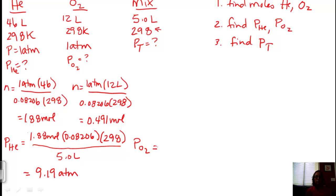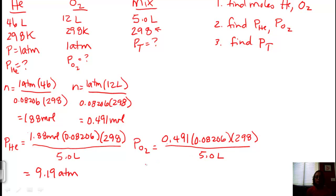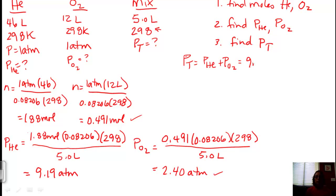Now we find total pressure by adding the partial pressures together: P_total = P_He + P_O2 = 9.19 + 2.40 = 11.59 atmospheres. Then you can apply significant figures from there.